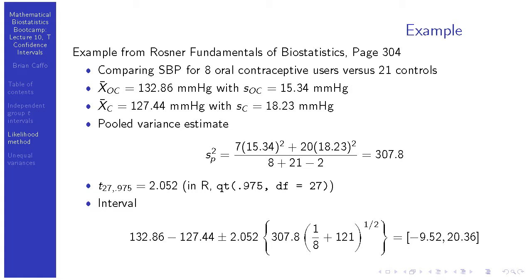The interval is 132.86 minus 127.44, plus or minus our t-quantile times the pooled variance times sqrt(1/8 + 1/21), which works out to negative 9.52 to 20.36. One of the most important things to look for with a difference in means is whether the interval contains zero. In this case it does contain zero, so there is evidence to say there is no difference — oral contraceptive use does not appear to present evidence of an associated increase in blood pressure.